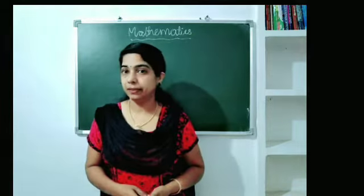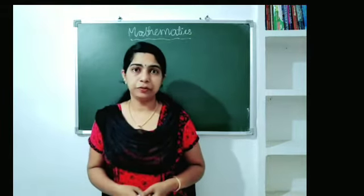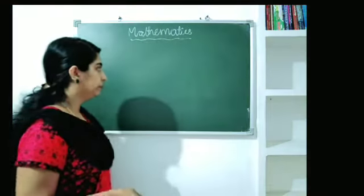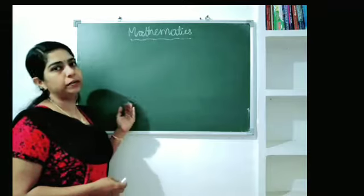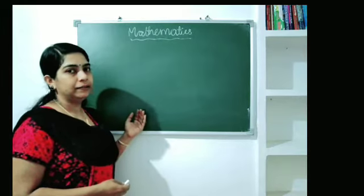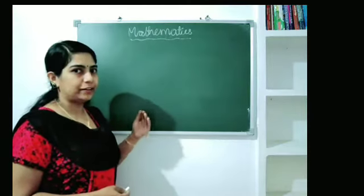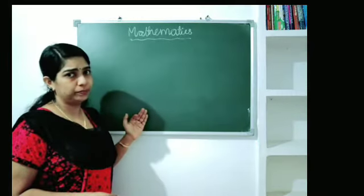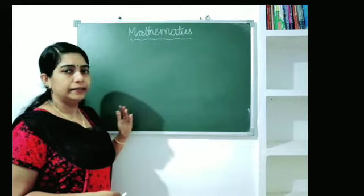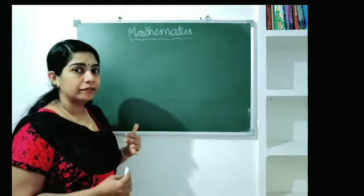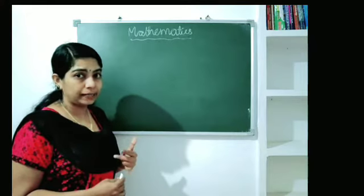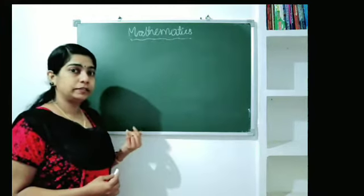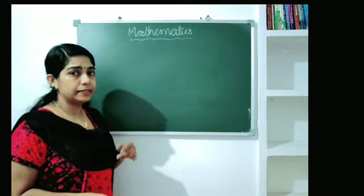Now let's put the number 20 on the board. We have to add 1 to 1, we have to add 1 to 2. The numbers go from 1 to 9. That means 1 to 8 is 18.